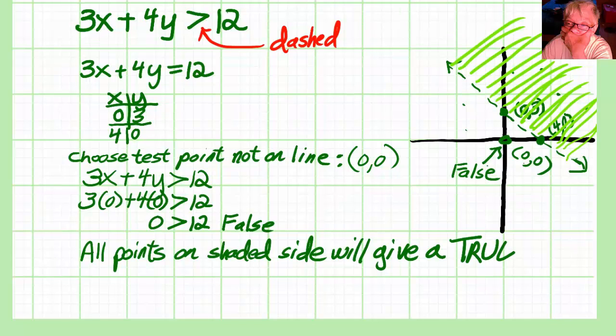And remember the line. In this case, a dashed line is called a boundary. And the fact that it's dashed means that the points on the line are not included with the true points.